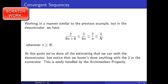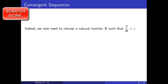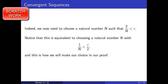At this point, we've done all the estimating we can with the denominator, but notice that we haven't done anything with the 2 in the numerator. This is easily handled by the Archimedean property. Indeed, we now need to choose a natural number N such that 2/N < epsilon. Notice that this is equivalent to choosing N with 1/N < epsilon/2, and this is how we will make our choice in our proof.